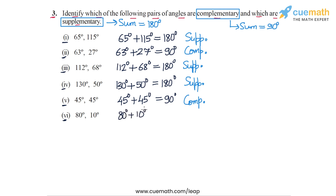Finally in part 6 we have 80 degrees and 10 degrees. 80 plus 10 is equal to 90 degrees, so this is again a pair of complementary angles because the sum is 90.